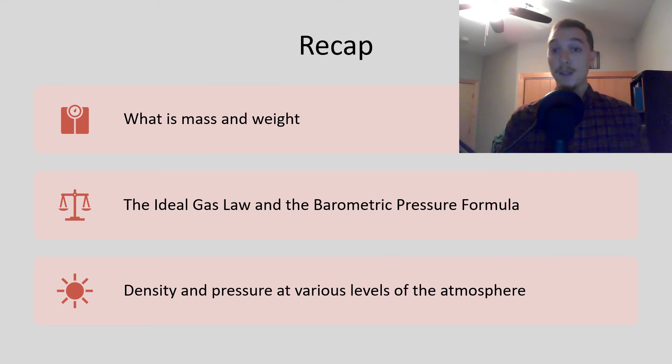To recap, in this video, we talked about what mass and weight are, we talked about the weight and mass of the atmosphere, the ideal gas law and the barometric pressure formula, and then how density and pressure and temperature vary throughout these four primary layers within the atmosphere: the troposphere, the stratosphere, the mesosphere, and the thermosphere. The next lecture that we're going to do is going to focus on the composition of the atmosphere. We've got physical in this one, we're going to get chemical in the next one. If you have any questions, feel free to reach out, and I will see you all in the next video. Thanks.